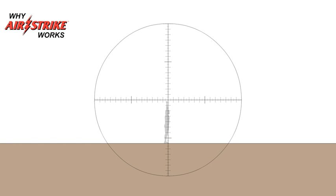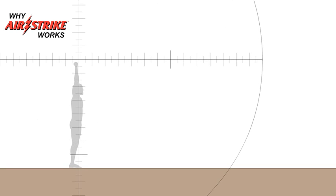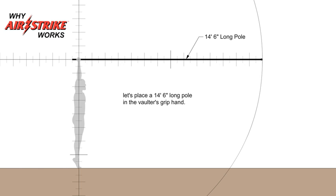Let's take a close mathematical look at why airstrike works. With the extension arm fully extended and the vaulter moving upward onto tiptoes, let's place a 14-foot, 6-inch long pole in the vaulter's grip hand.